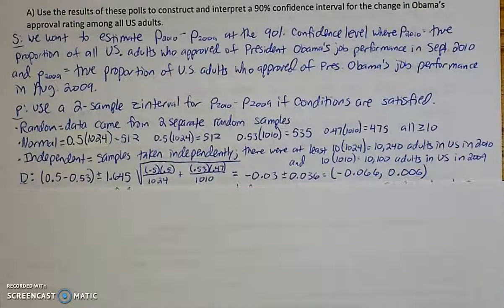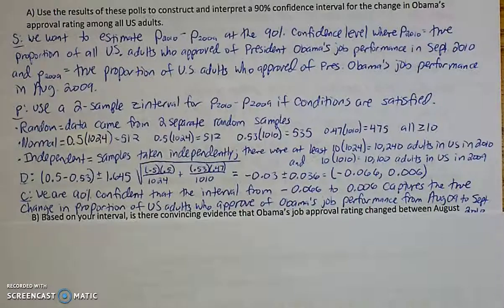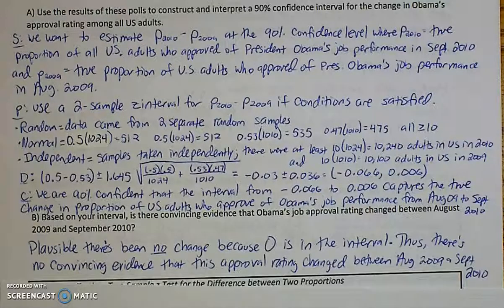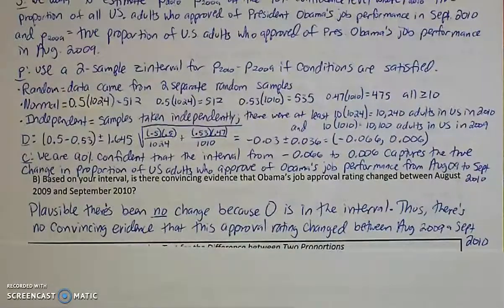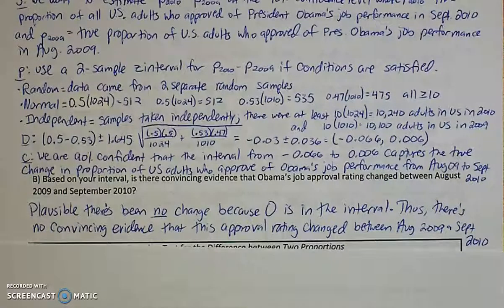After you come to your conclusion with your math, we write our conclusion statement. We are 90% confident that the interval from negative 0.066 to 0.006 captures the true change in proportion — the true difference in proportion of U.S. adults who approved of Obama's job performance from August 2009 to September 2010. Is there evidence that it has changed? No, not really. It's plausible that there hasn't been any change because 0 is in this interval — there are negatives and positives, and 0 is in between there. So there's no convincing evidence that this approval rating has, in fact, changed between August 2009 and September 2010.